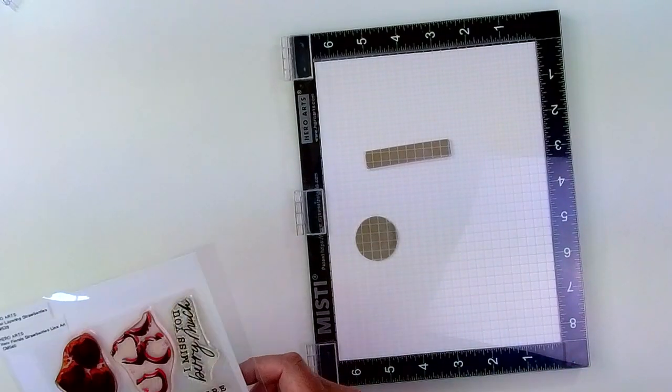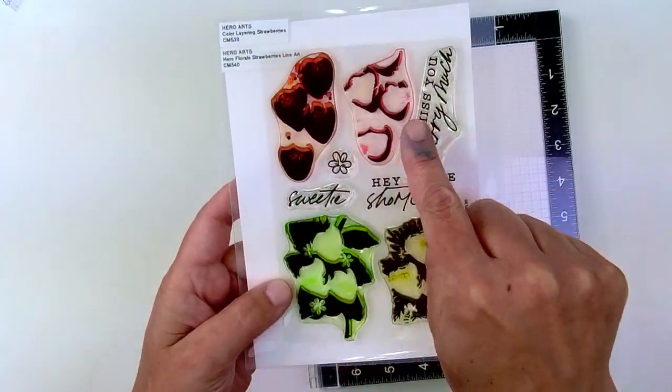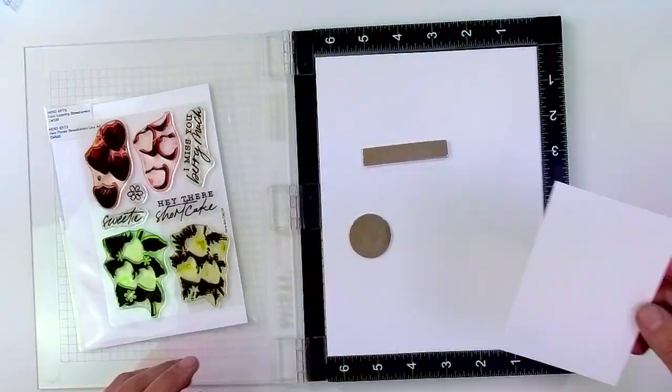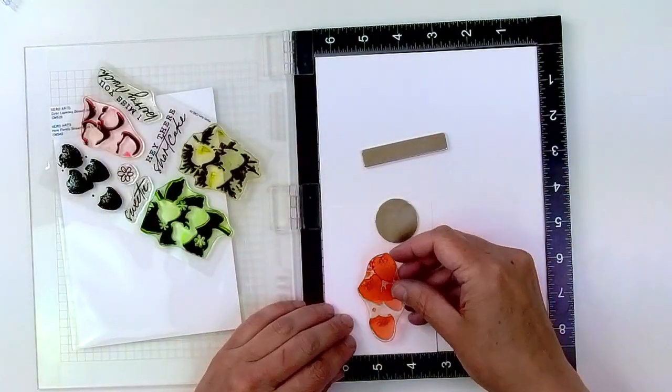This color layering guide lets us know that we need to stamp the background of the strawberries, then the detail, background of the leaves, and then the detail, and we will have perfect strawberries.